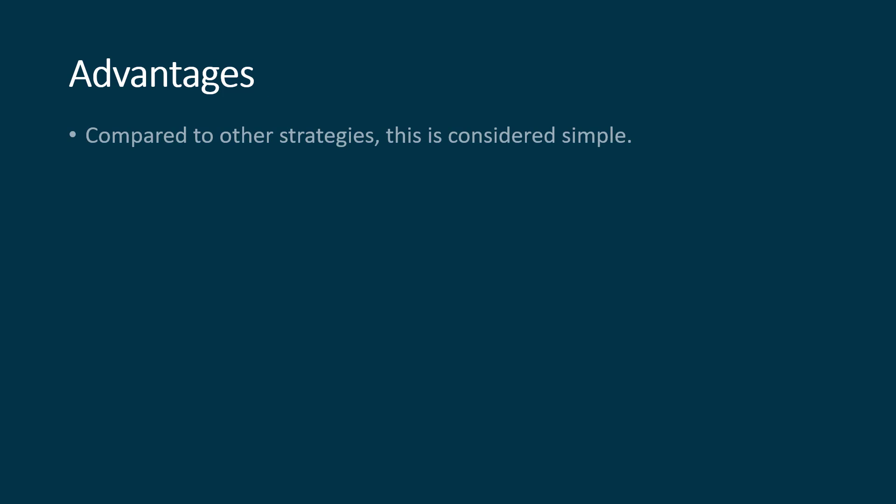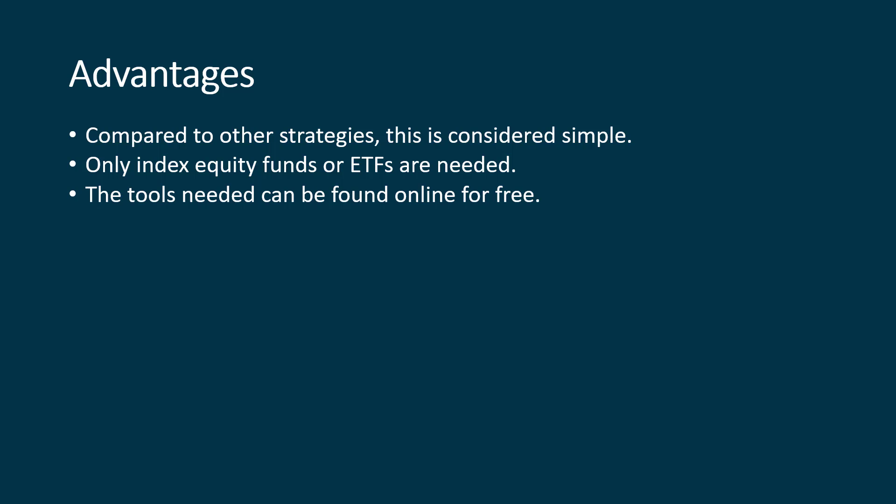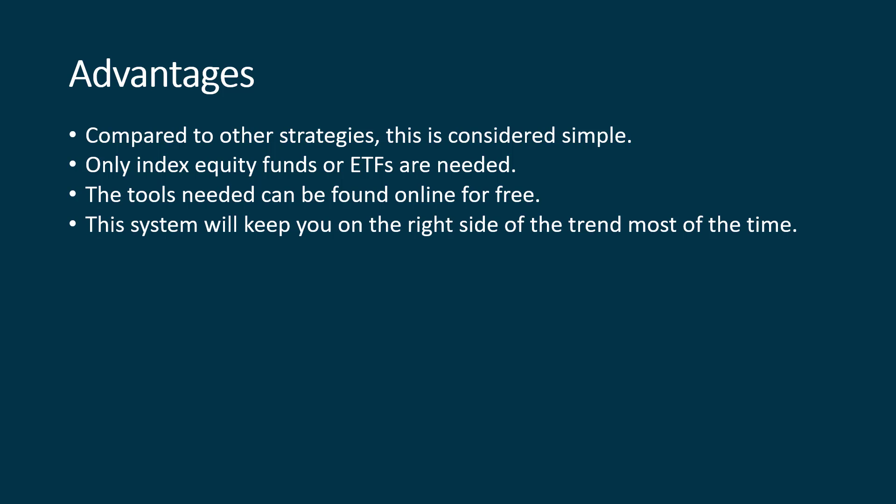What are the advantages of this strategy? Compared to other strategies, this is considered simple. Compared to a lot of the other strategies that I teach, this strategy is considered to be simple. When we're using this basic strategy, we're looking at just investing in an index rather than individual stocks. You can also use exchange-traded funds or ETFs, and those have become very popular over the last 20 years or so. Either one will work just fine for this. The tools that you need to do this you can find for free online. The basic idea behind this strategy is it will keep you on the right side of the trend most of the time. This is a trend-based system.